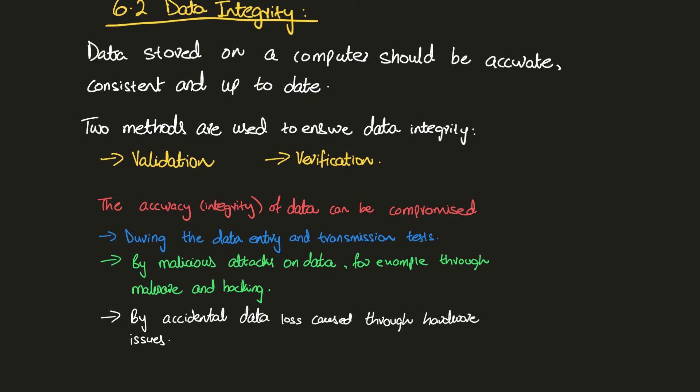We'll be discussing these in detail. First, how can the accuracy or integrity of data be compromised? It can be compromised during data entry and transmission — when you're entering data or when it's being transmitted from a form to a database, or when you're transferring files. It can also be compromised by malicious attacks on data, for example through malware and hacking. Someone can hack into an account or a database and then change its content, compromising data integrity.